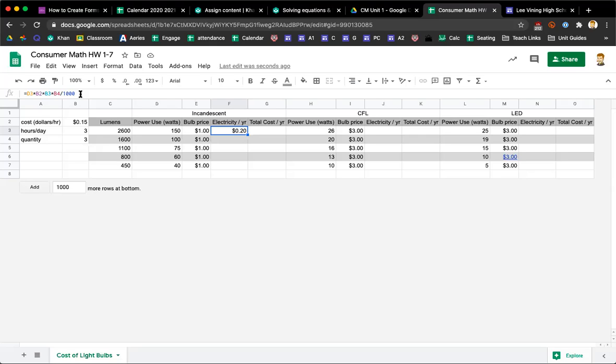I got 27 cents. Check your formula again. Is it d3 times b2 times b3 times b4 divided by a thousand? When I did four hours daily, I changed mine to three. If I change it to four, yes, I get 27. But this is per day.